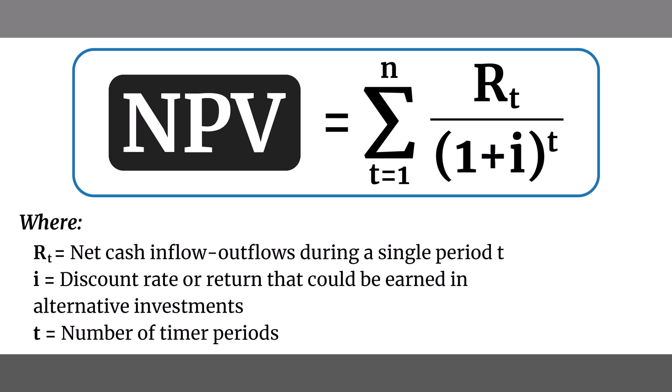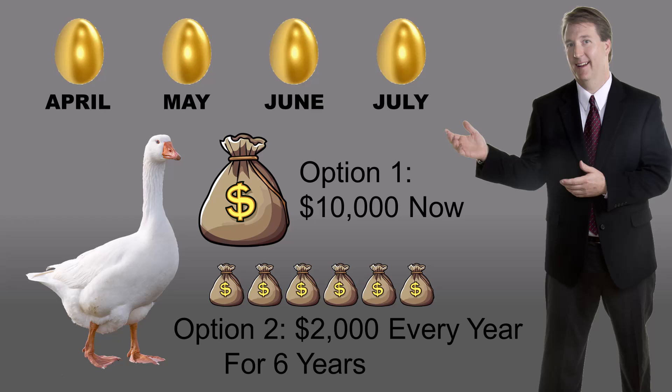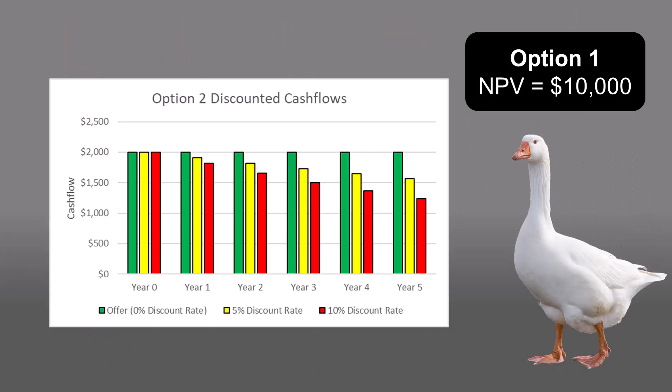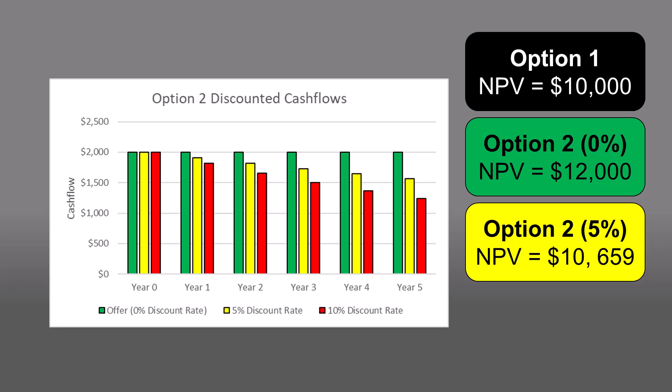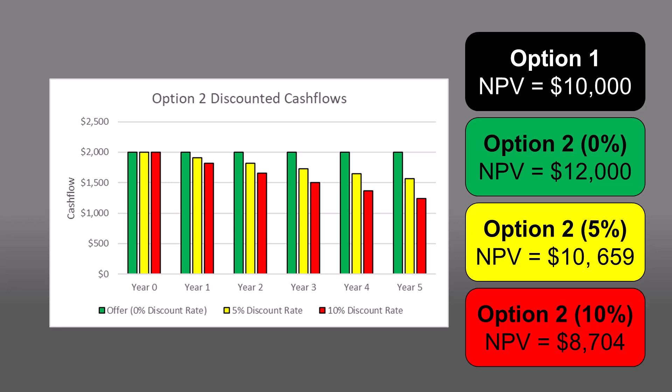Then you sum over time and get a number you can use for making comparisons. Option one has a net present value of $10,000 because he's offering to give you $10,000 right now. If there were no time value of money — the discount rate was zero — then option two would be worth $12,000 ($2,000 six times). If we assume a 5% discount rate, the net present value of option two is $10,659. And if we assume a discount rate of 10%, the net present value is $8,704.